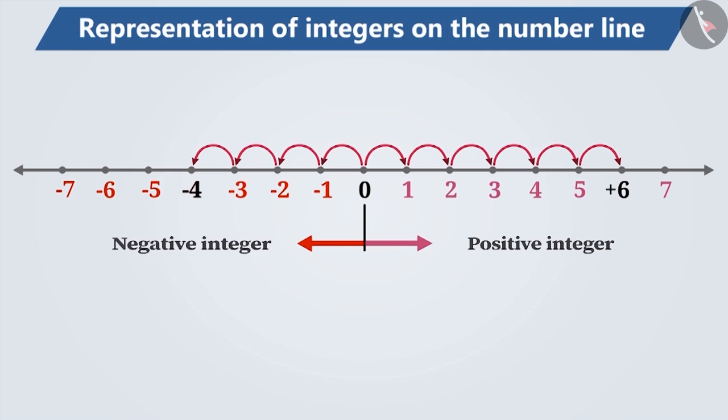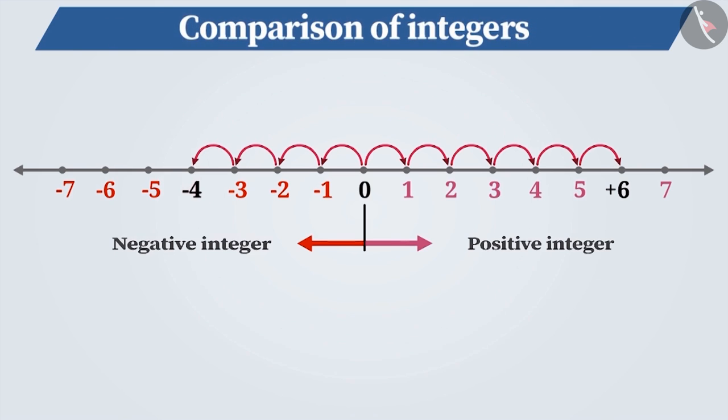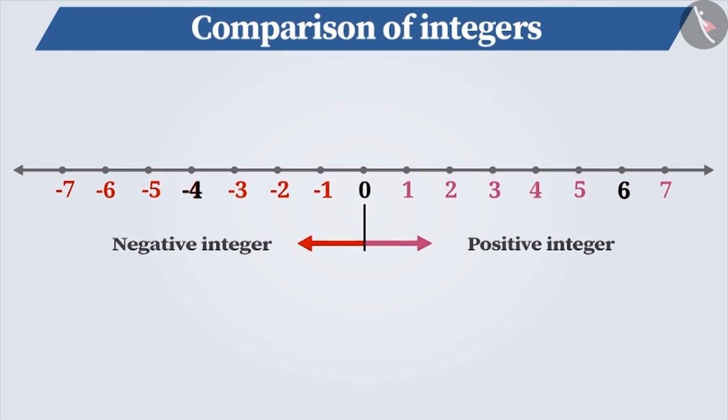Expressing integers on the number line makes it easier to compare them. Can you tell me how to compare integers on a number line? In a number line, the value of the number increases as we move towards the right and decreases towards the left.